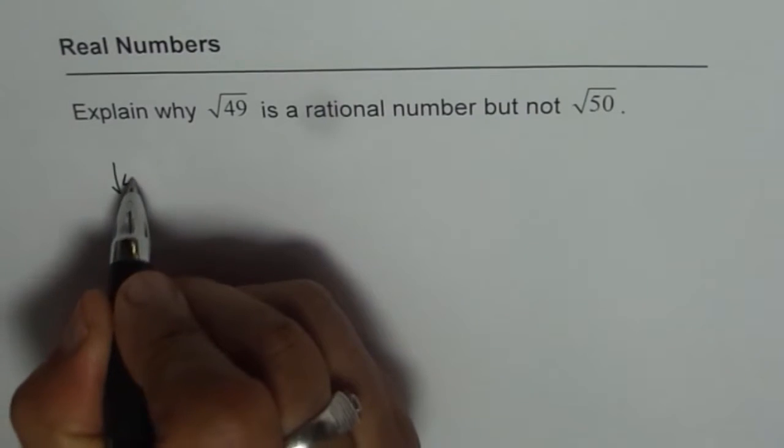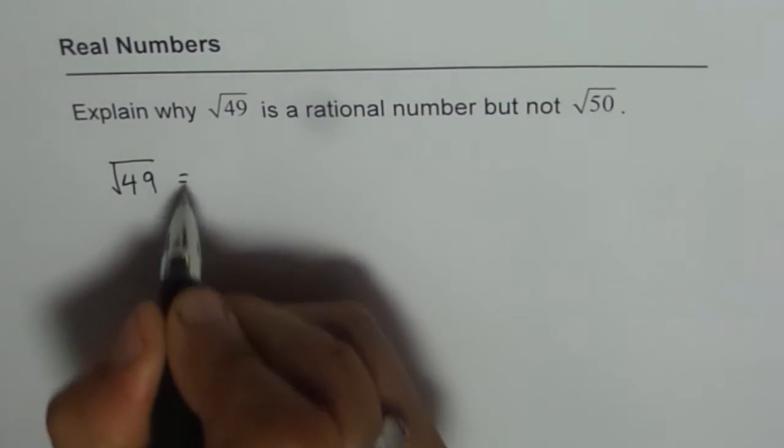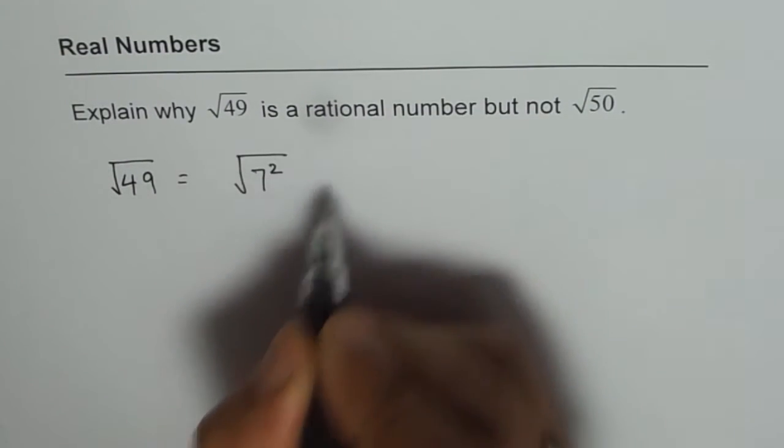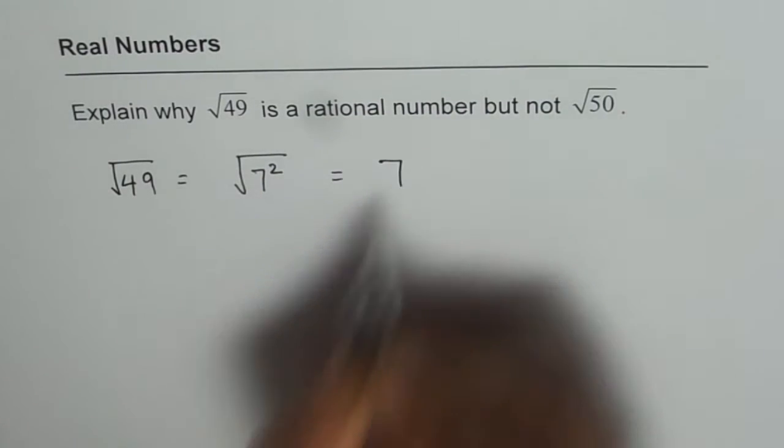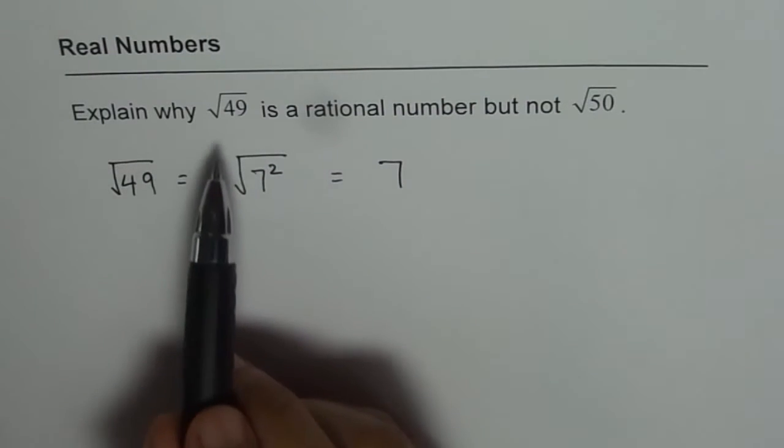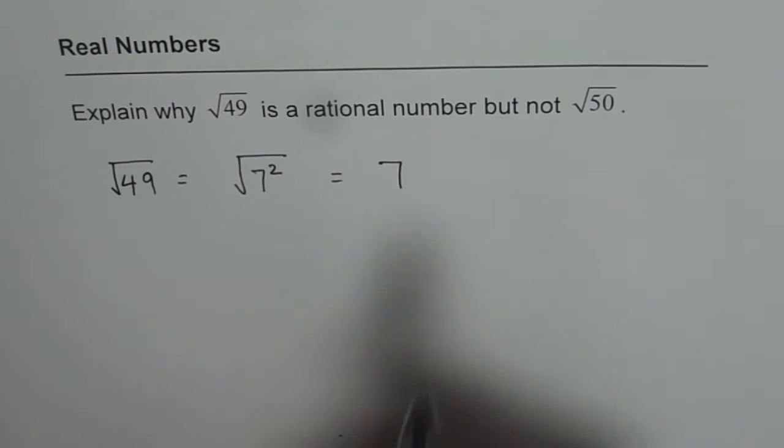Square root of 49 can be written as square root of 7 squared, which is equal to 7. We can always write square root of 49 as a rational number, 7.